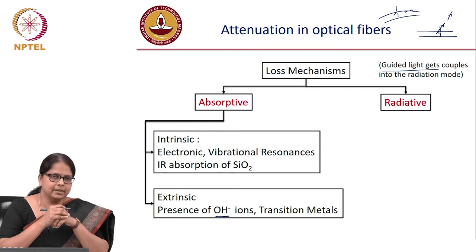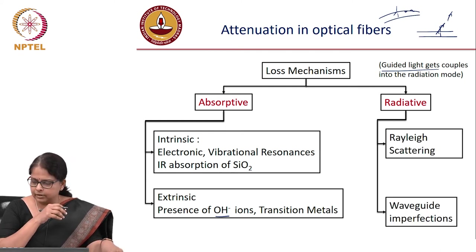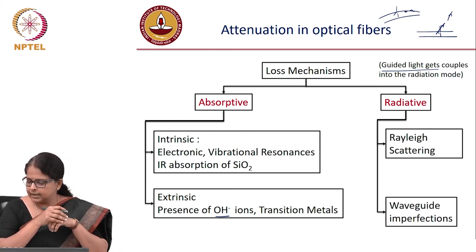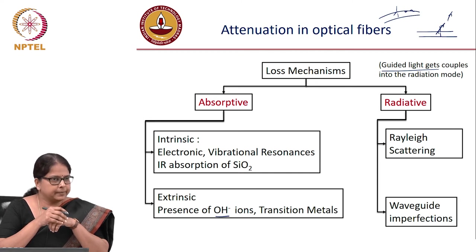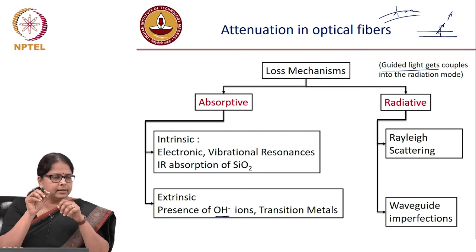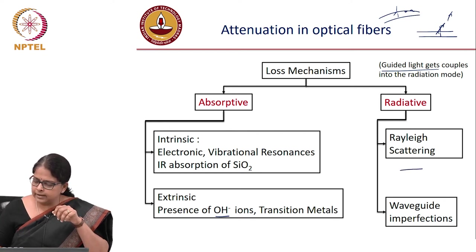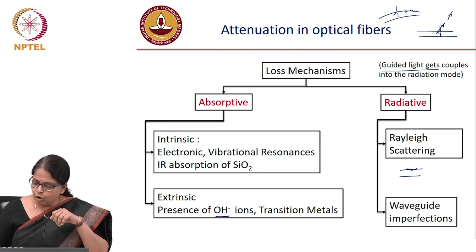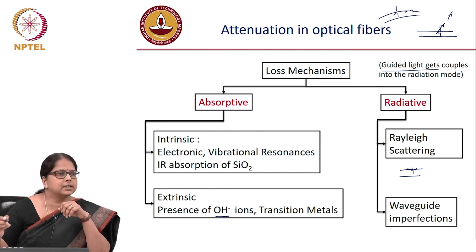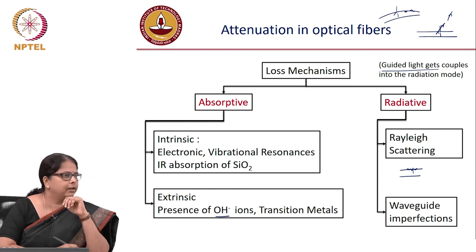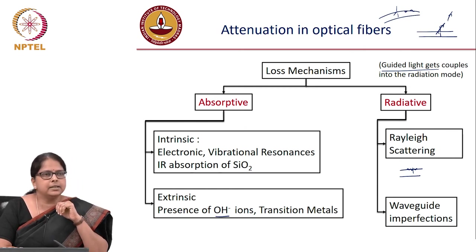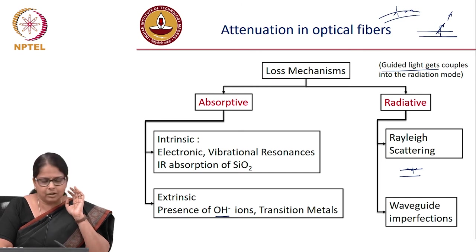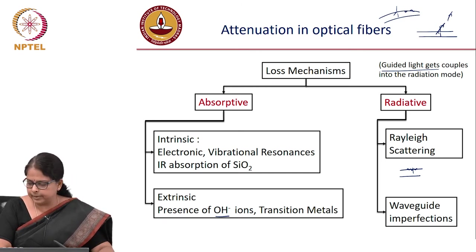The two sources of radiative loss in a fiber are: first, Rayleigh scattering; and second, waveguide imperfections — small micro bends, surface non-uniformities, or corrugations where the local angle violates the critical angle condition, causing energy to radiate out.